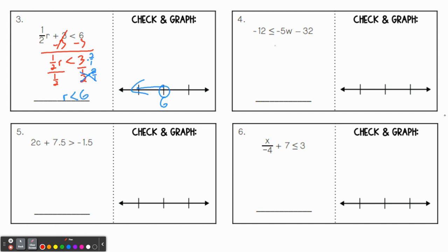All right, number 4. Negative 12 is less than or equal to negative 5w minus 32. Again, we want to isolate the variable. We do that by getting rid of the negative 32 by adding 32 to both sides. Okay, so negative 12 plus 32. Remember, these are opposite signs. So we are going to subtract them. So we should get 20 is less than or equal to negative 5w. And remember, we said when we get a negative in front of the variable, that means we're going to flip the sign, right? So divide by negative 5, we should get negative 4 is greater than or equal to w. In other words, close circle, w is less than negative 4.